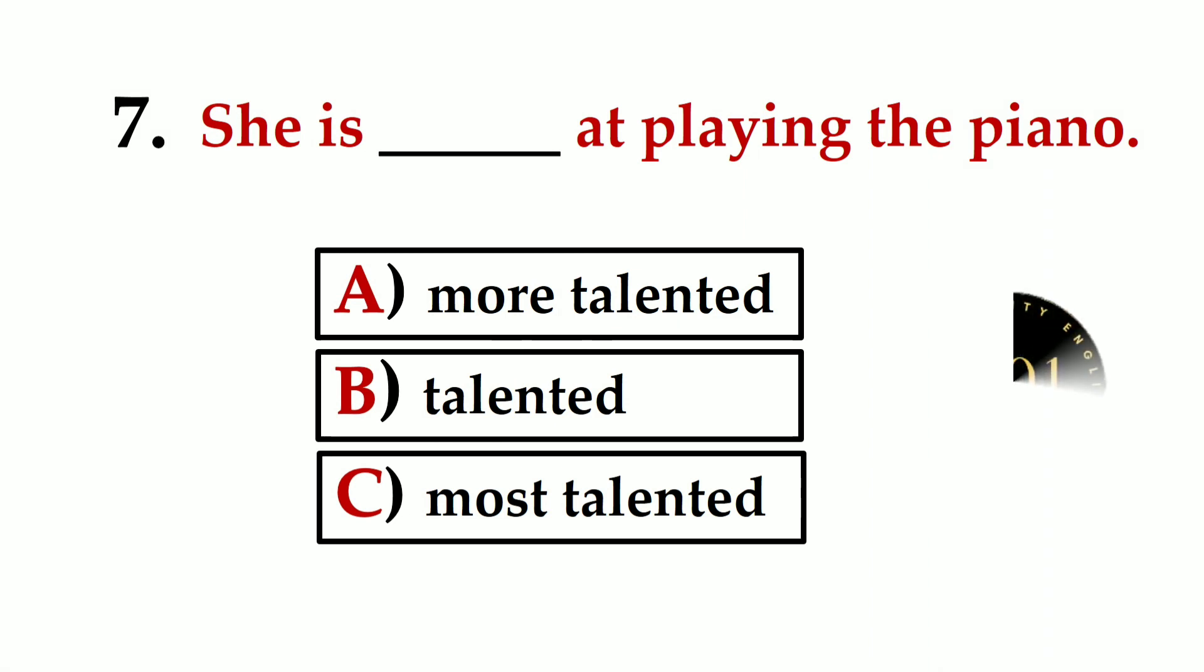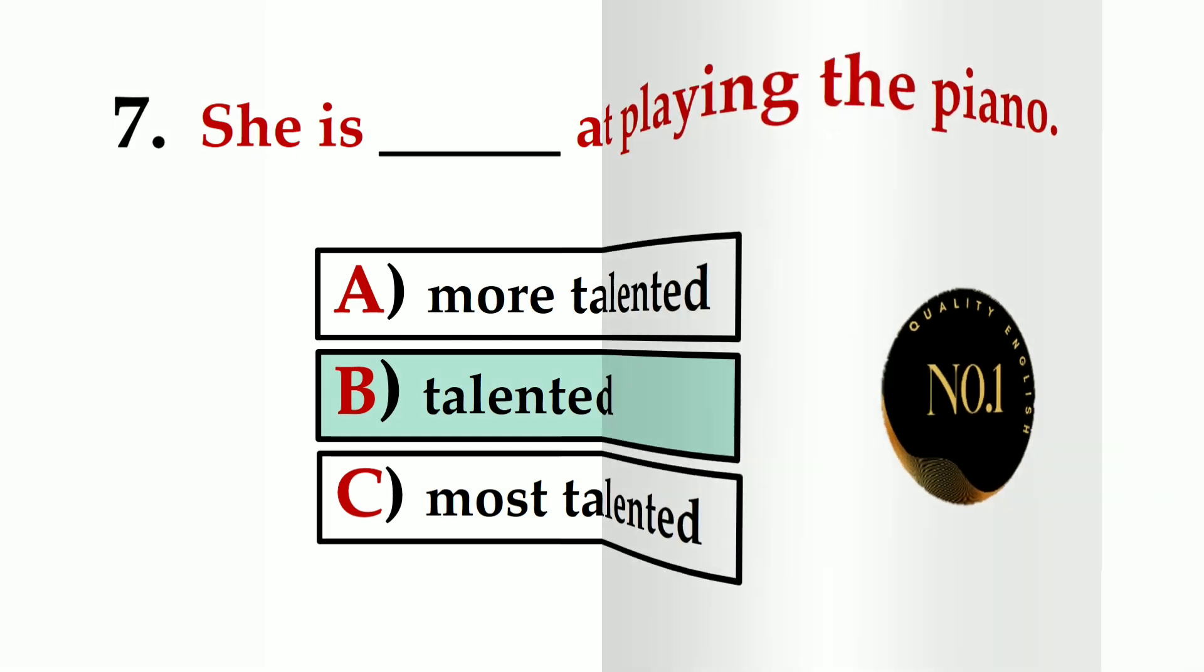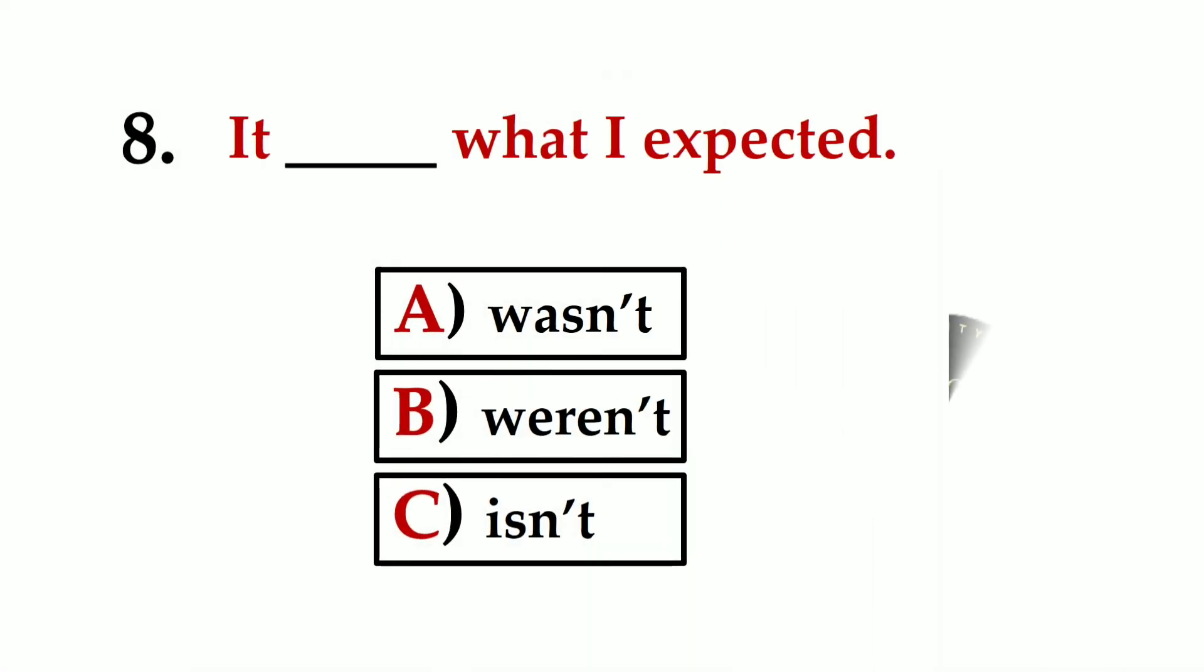Number seven: She is ___ at playing the piano. A) more talented, B) talented, C) most talented. The correct option is B) talented.